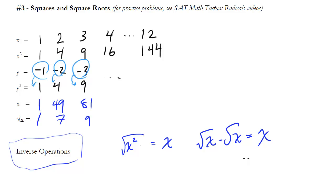We'll talk more about radicals in a later video. For instance, if I had the square root of 16 squared, well, the square and the square root just cancel and we're left with the regular number — so it's just 16. That's just what we mean by inverse operations: you can square something and then square root it and you're back to where you started.